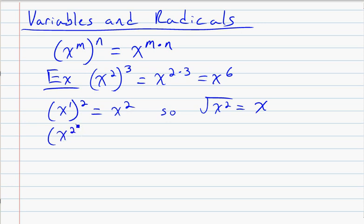If I take x squared quantity squared, I get x to the 4th. So this means the square root of x to the 4th equals x squared.